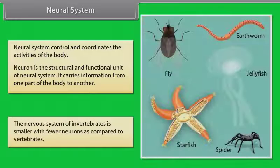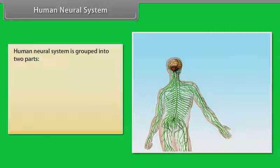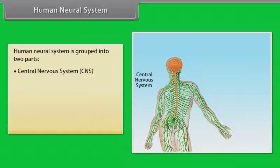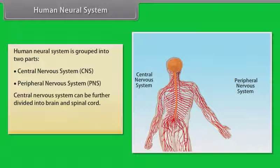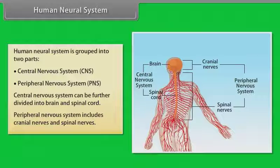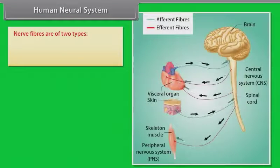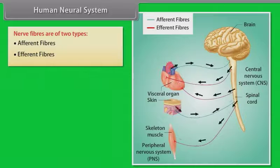The nervous system of invertebrates is smaller with fewer neurons as compared to vertebrates. Human neural system is grouped into two parts: central nervous system and peripheral nervous system. Central nervous system can be further divided into brain and spinal cord. Peripheral nervous system includes cranial nerves and spinal nerves. Nerve fibers are of two types: afferent fibers and efferent fibers.